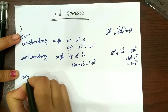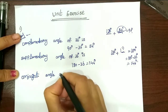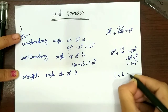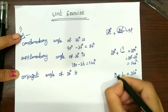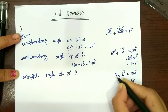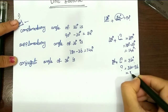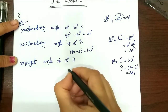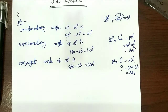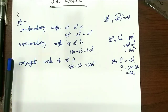The conjugate angle: if you add two angles they equal 360 degrees. One angle is 36. So 360 minus 36 gives us 324 degrees. That is the conjugate angle. So 360 minus 36 equals 324. That's it. Complementary, supplementary, and conjugate — the definitions are easy.